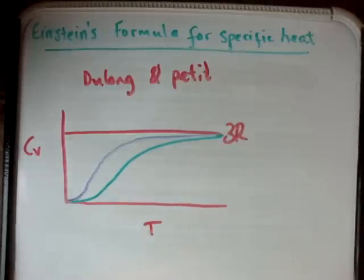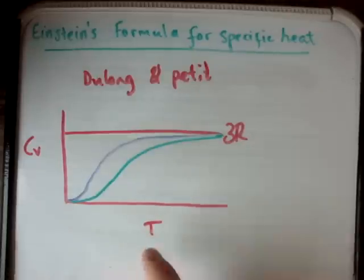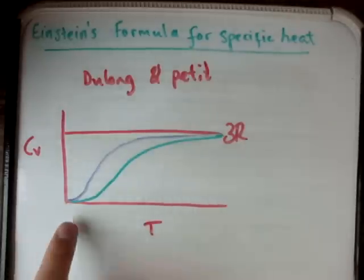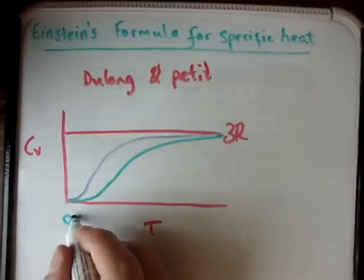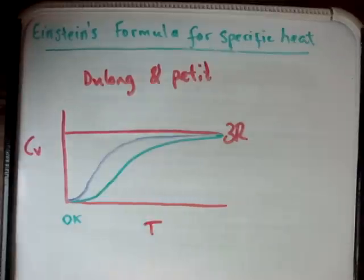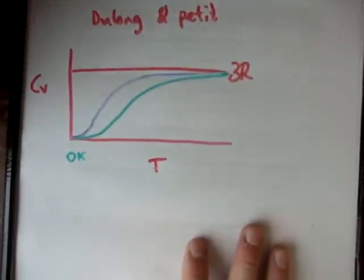If you're thinking about this, you might say: hold on a second. This implies that if I approach my temperature towards zero Kelvin, then my specific heat capacity is going to go to zero. And that's absolutely what this implied.